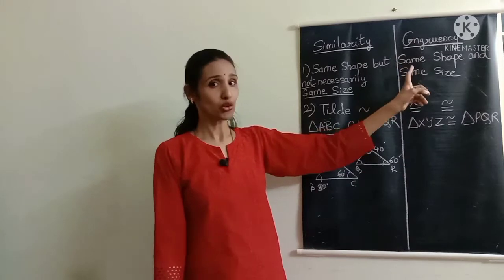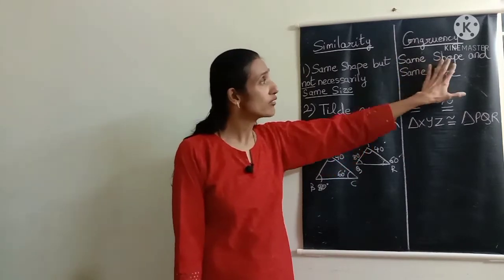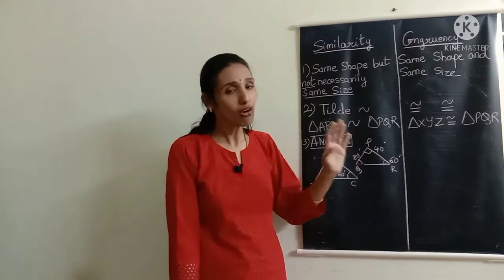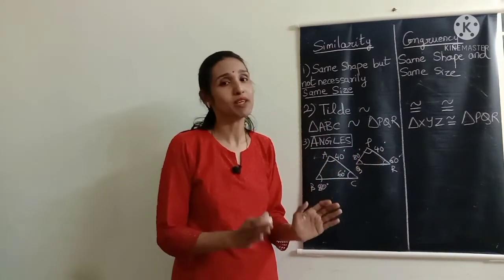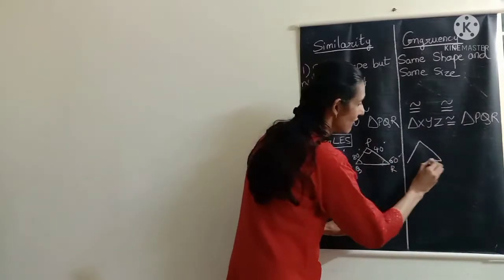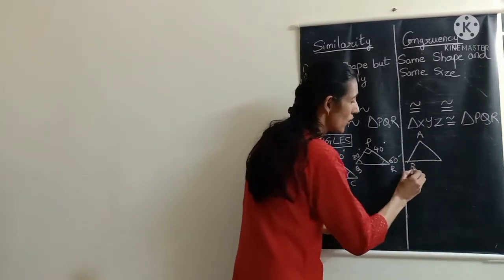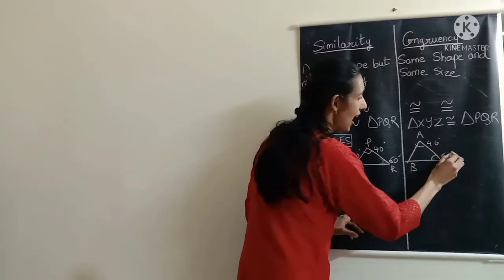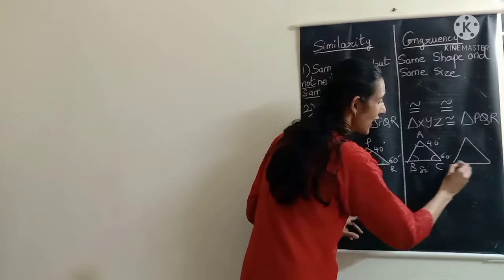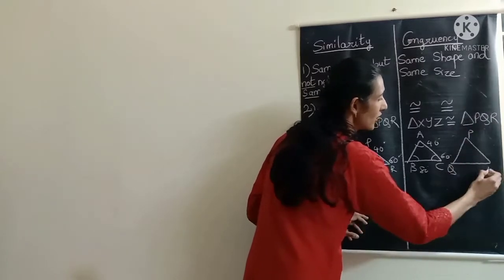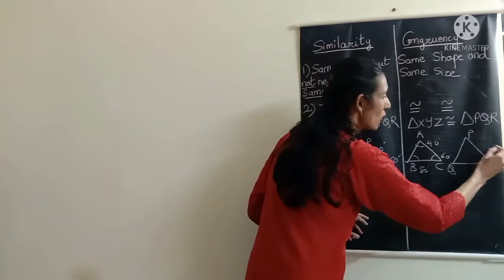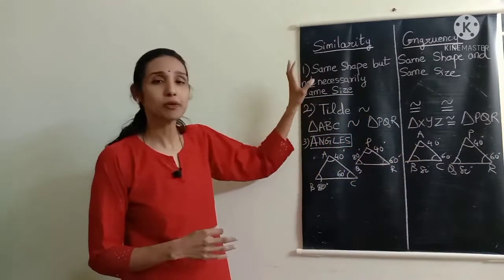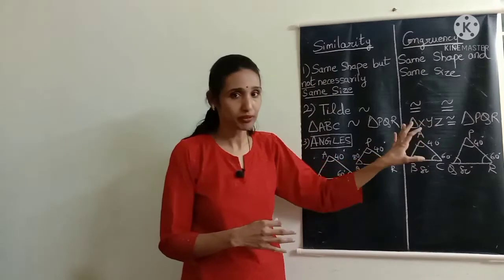Now for congruent figures — since congruent figures also need to have the same shape, the corresponding angles in all congruent figures should also be equal. So for example, triangle ABC with angles 40°, 60°, and 80° must have a corresponding triangle PQR where the corresponding angles are also equal. So the angle property applies to both similar and congruent figures.